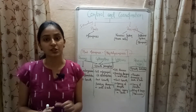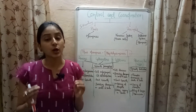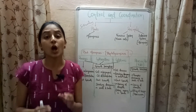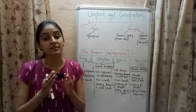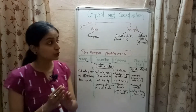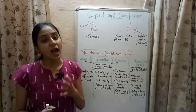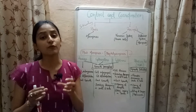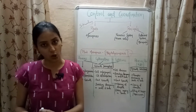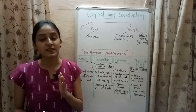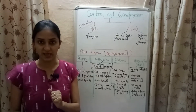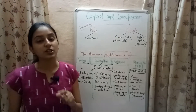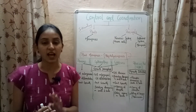Coordination is the working together of various organs of an organism to produce a systematic response to a particular stimulus. For coordination to occur, a certain form of control is required in our body — this is what control and coordination means.